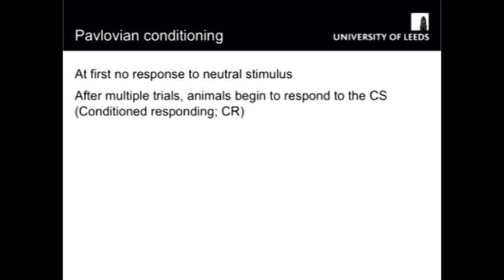Everything I'm going to tell you about today comes from Pavlov's work. Initially, there's no response to the neutral stimulus — why would there be? It's neutral. There may perhaps be an unconditioned response, a slight flinching if there's a tone, or rearing if there's a light, but that very quickly habituates. As trials proceed between the CS, the neutral stimulus, and the US, the biologically relevant stimulus, the behaviour of the animal changes.